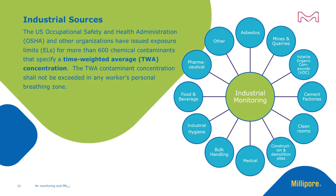The U.S. Occupational Safety and Health Administration, or OSHA, and other organizations have issued exposure limits for more than 600 chemical contaminants that specify a time-weighted average, or TWA, concentration. The TWA contaminant concentration shall not be exceeded in any worker's personal breathing zone.